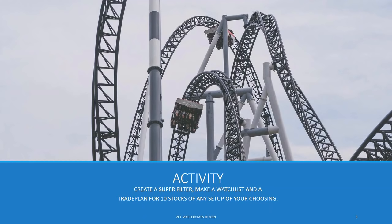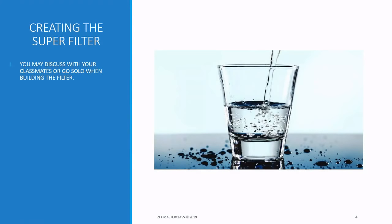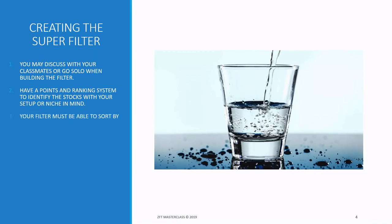Here are some guidelines to help you create your filter. Number one: you may discuss with classmates or go solo when building the filter. Number two: have a points and ranking system to identify stocks with your setup or niche in mind. For example, for a boss breakout — how many points do you give for 3 months, 6 months, 9 months, 80-week high? The higher the points, the higher the priority.